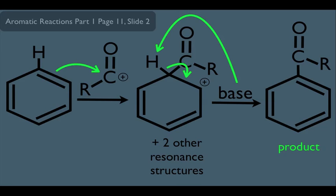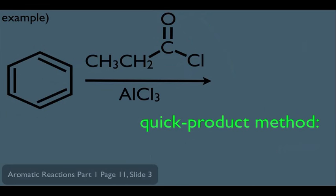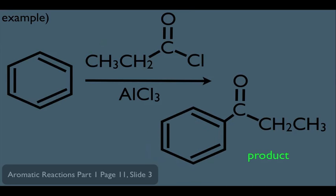Friedel-Crafts acylation does follow the general mechanism for electrophilic aromatic substitution. For the quick product method: identify the acyl chloride, AlCl3, and the benzene ring, then focus on the carbon directly connected to the halogen — that carbon connects directly to the benzene ring in the product. This makes the quick product method very straightforward for this reaction.